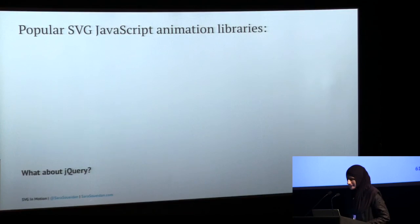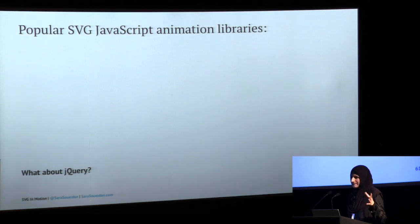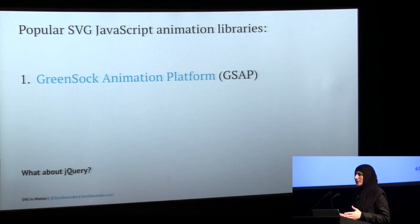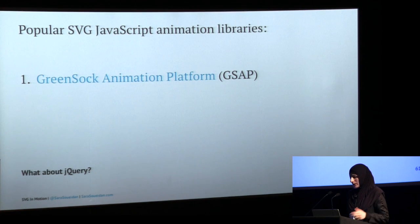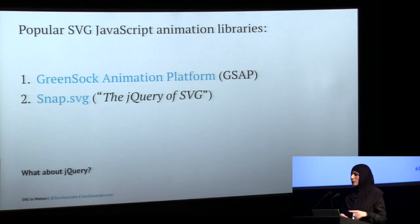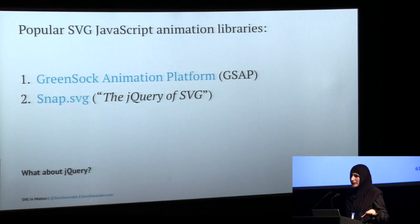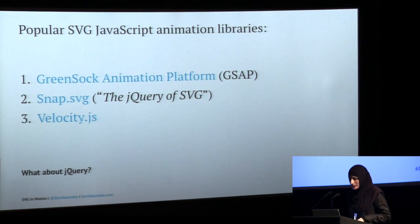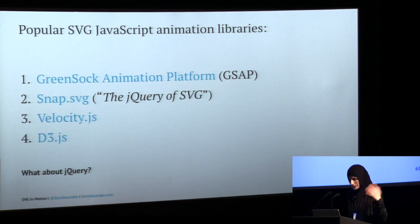For JavaScript SVG animation, use a JavaScript animation library to avoid the headaches mentioned earlier. The most popular ones are GreenSock (GSAP), SnapSVG — also known as the jQuery of SVG — Velocity, and D3.js, mostly used for data visualization. I use SnapSVG for DOM manipulation and GreenSock for animations.